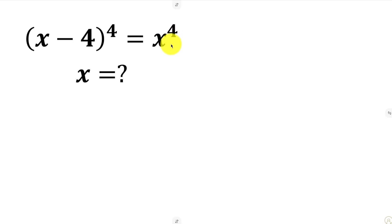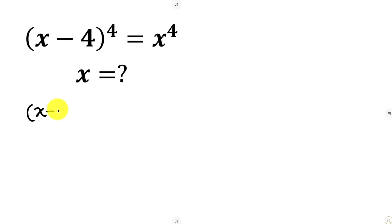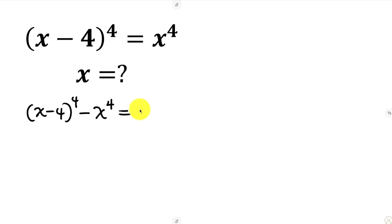In order for us to find all values of X, our first step will be to move X to the power of 4 to the left hand side. So we have X minus 4, all raised to power 4, and as this crosses to the left it becomes minus X to the power of 4, and this is equal to 0.